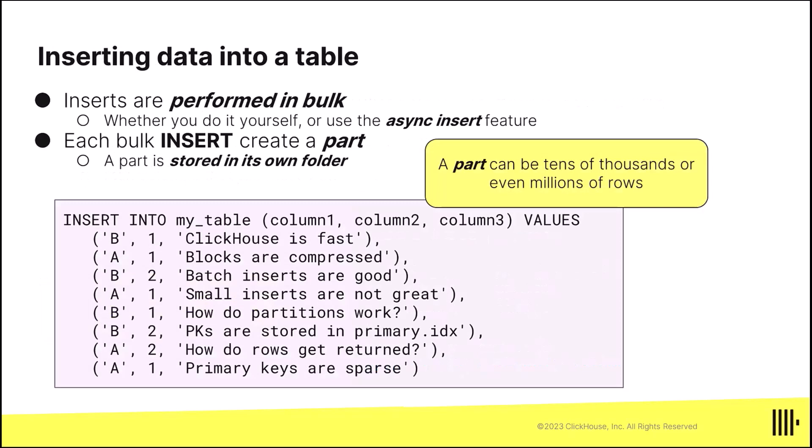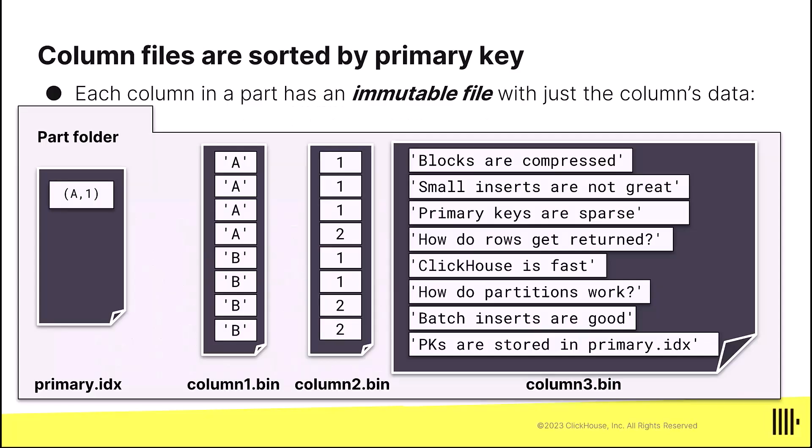I'll put some rows in there. Notice that column 1 is either A or B, and column 2 is either 1 or 2. It looks like I'm inserting 8 different rows. If you look at the files inside the part folder that gets created for that insert, you could actually see that in column 1 all the A's will be first and then all the B's. Really, column 1 and column 2 together, it's all the A1's are first, then there's an A2, couple of B1's, and then the B2's are last. That's how the data gets stored, so that third column follows along and the strings are sorted by those primary key values.